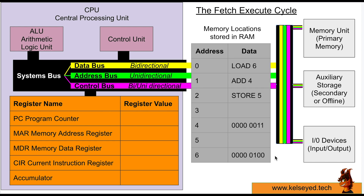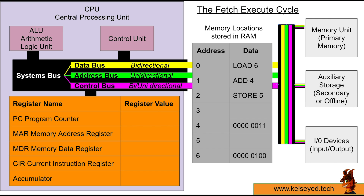We're going to run through a simple program and look at how the processor would complete it. We'll use memory address locations 0 to 6. We're going to complete a couple of executions of the Fetch Execute Cycle to perform a very simple calculation. In reality, multiple millions or billions of processes occur very quickly, but we'll do just one slowly so you can understand the process. Basically, we're going to load the value in memory location 6, add the value in memory location 4, and store it to memory location 5.